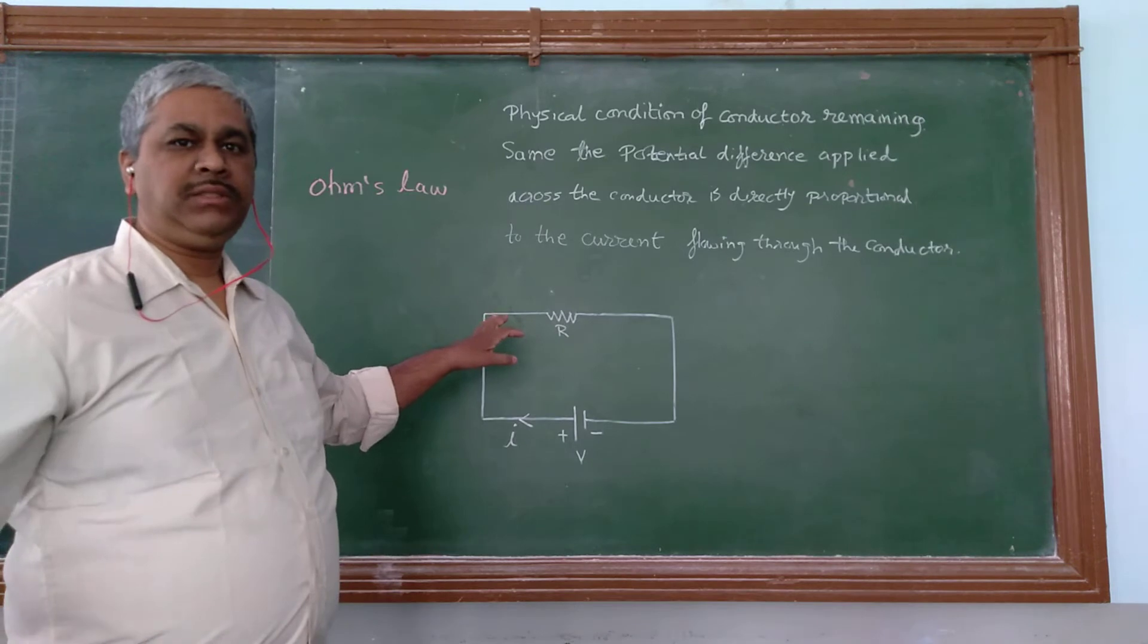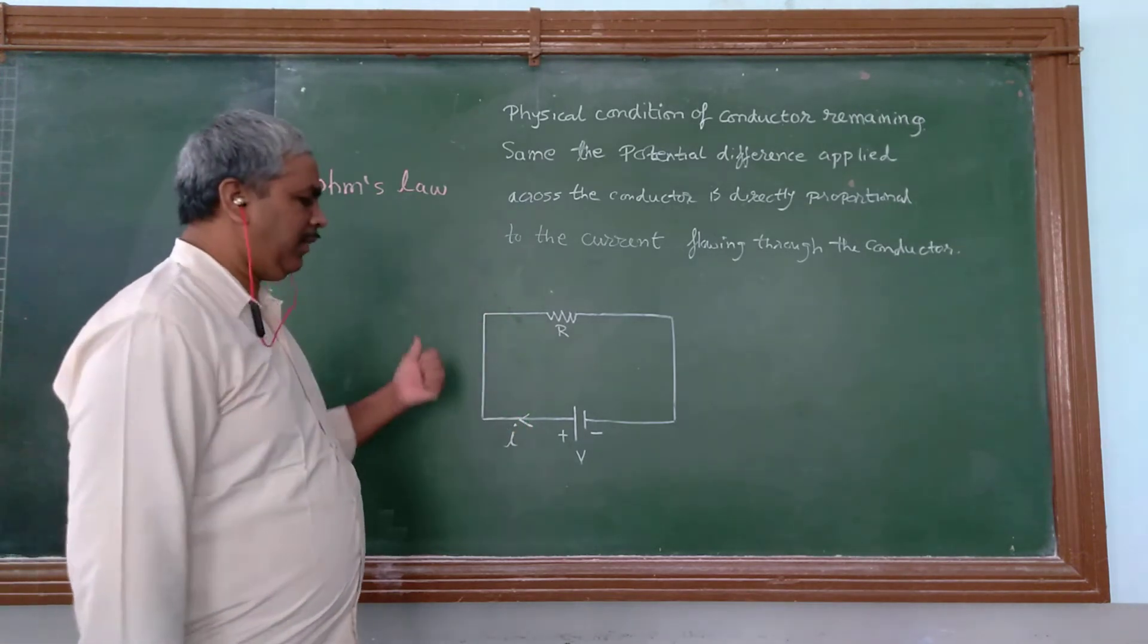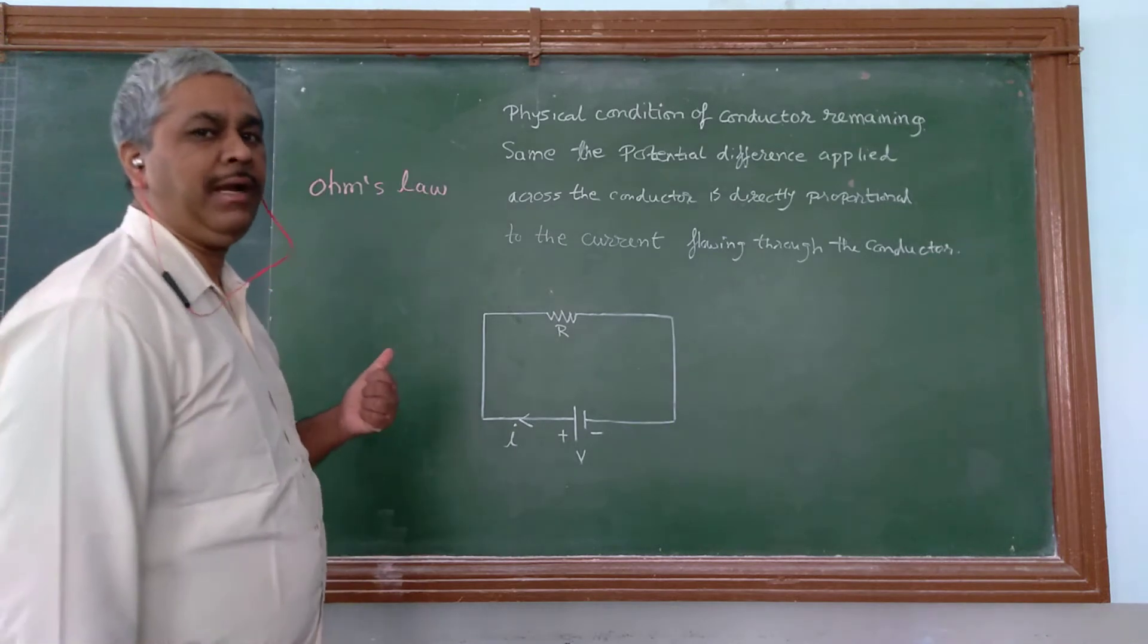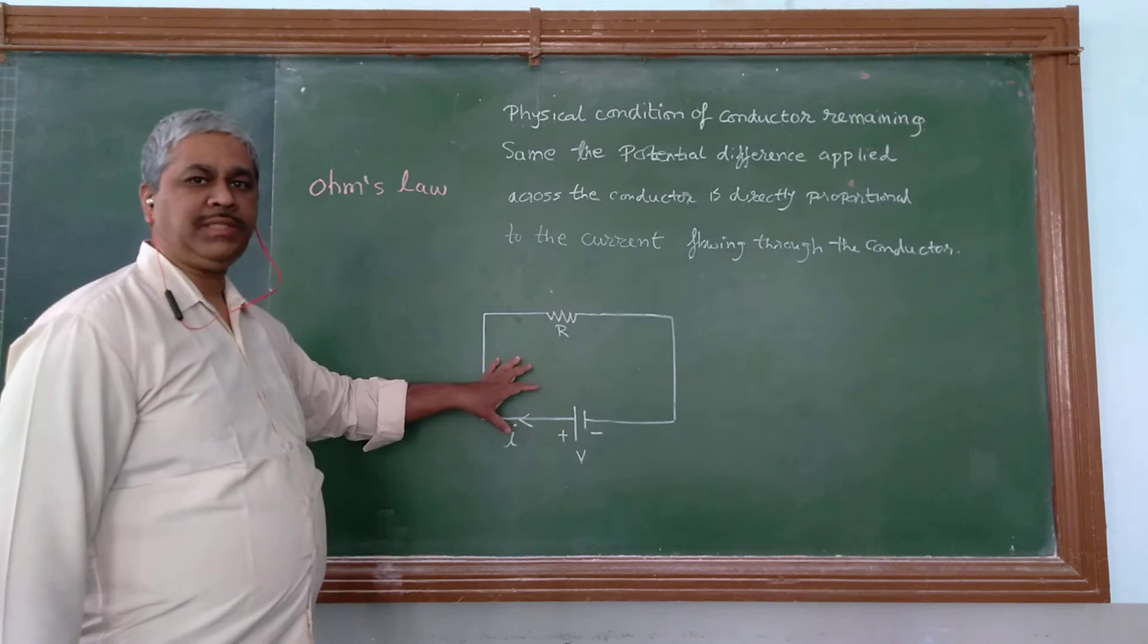We are going to do an experiment on this, where we are going to measure the potential difference and the current by using a voltmeter and an ammeter. Before, we should know how to draw the circuit diagram.